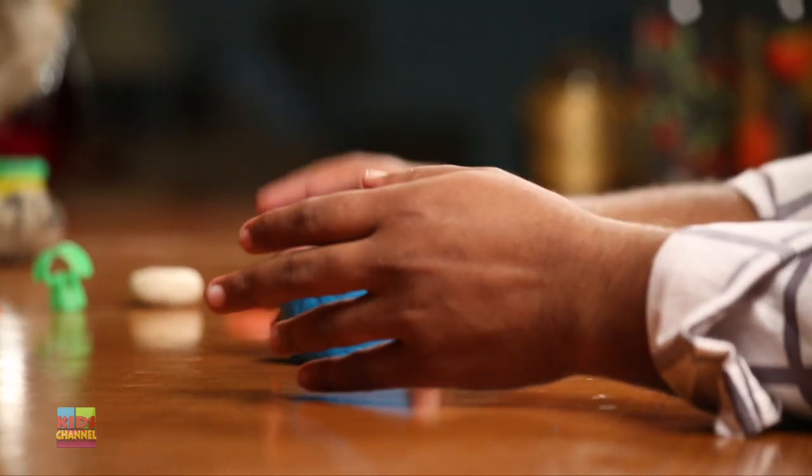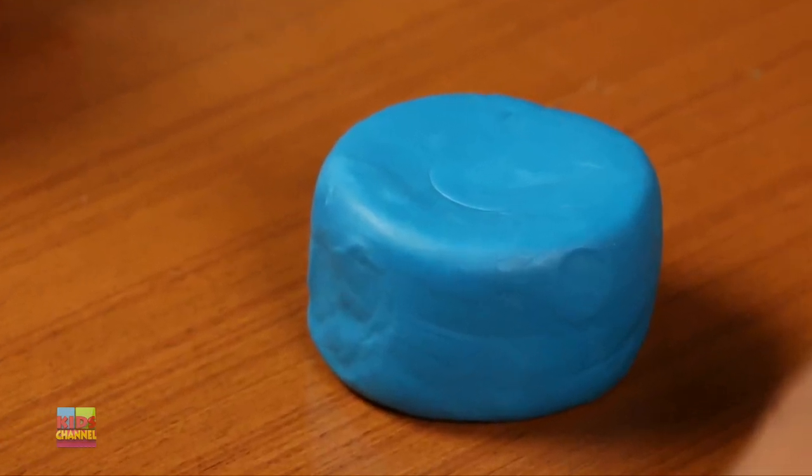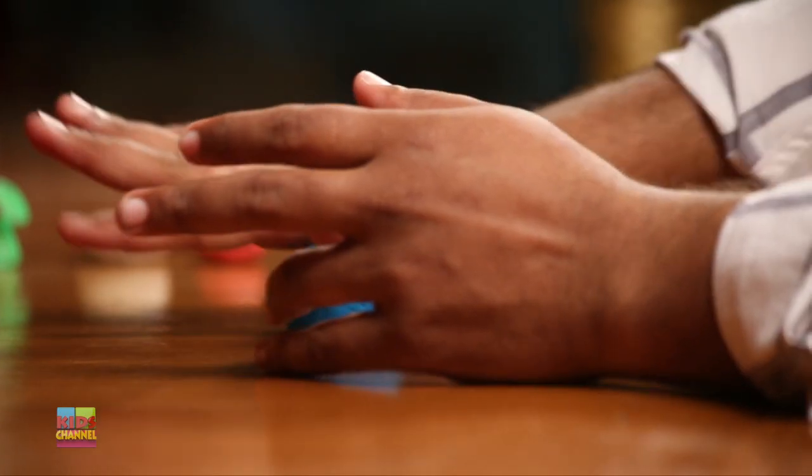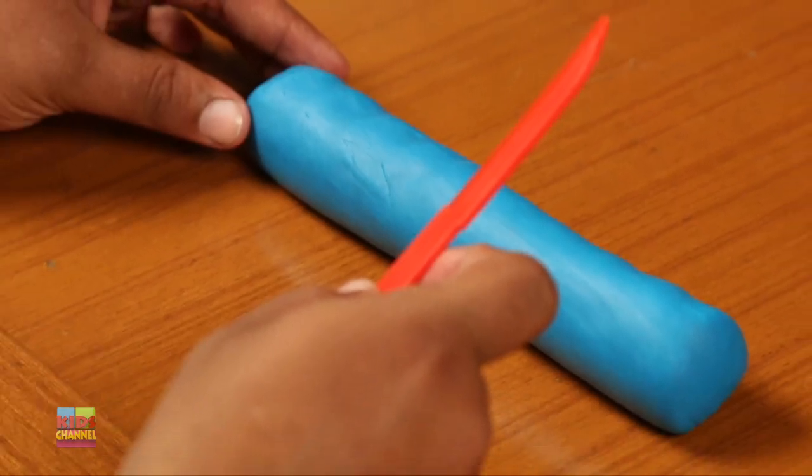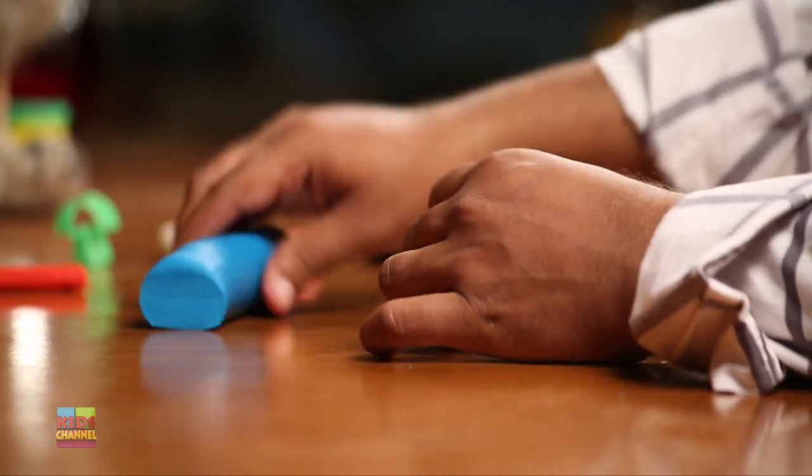All right, to get started, first take a large amount of blue Play-Doh and roll it properly and nicely into a big fat tube. Then take the Play-Doh knife and cut a part of it off. Using the small amount, start rolling that in your hand.